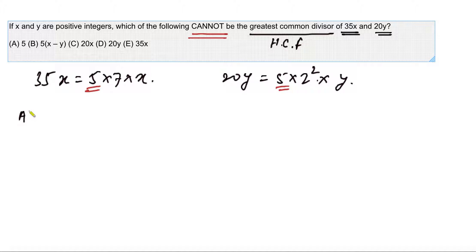Let's go for the first option A which is 5. Can 5 be the highest common divisor of these two numbers? The answer seems like yes. But the important part is that you should always bring in some values to be confident that what you're thinking is right. Can we imagine values of x and y for which the highest common factor becomes 5? If I assume x equal to 1 as well as y equal to 1, then the highest common factor will be 5. For that reason we can eliminate the first option.